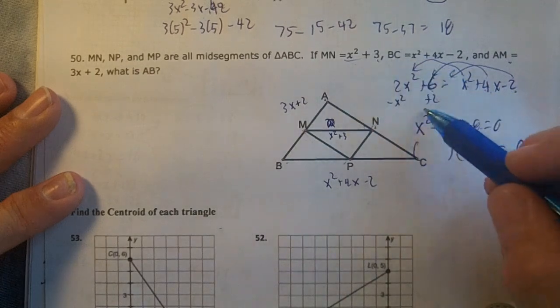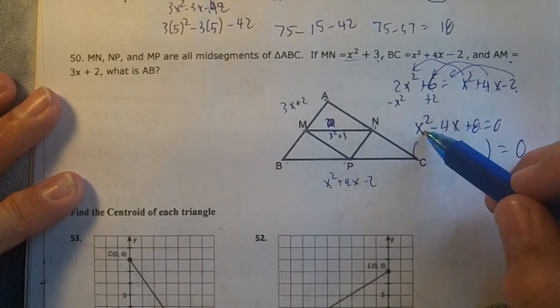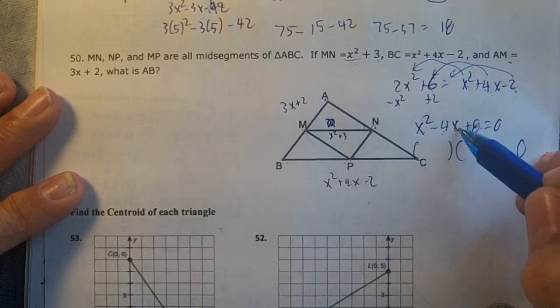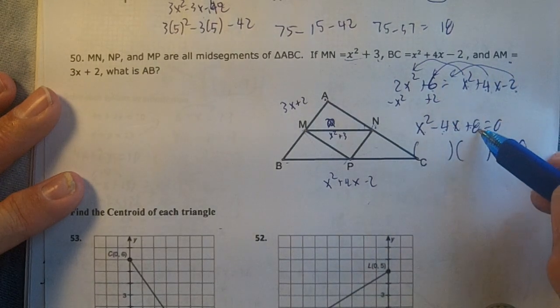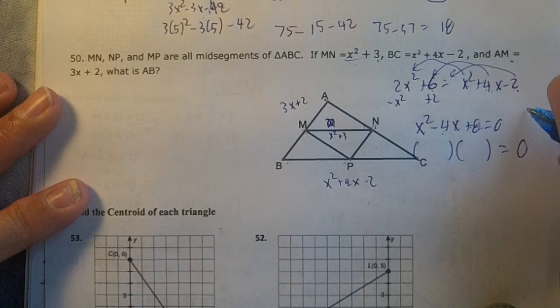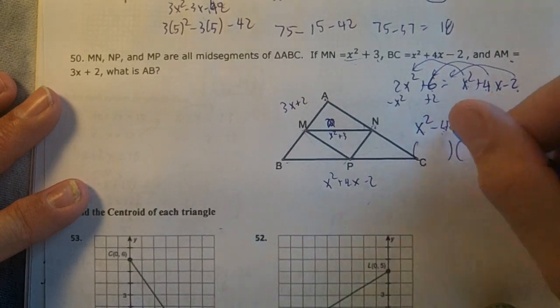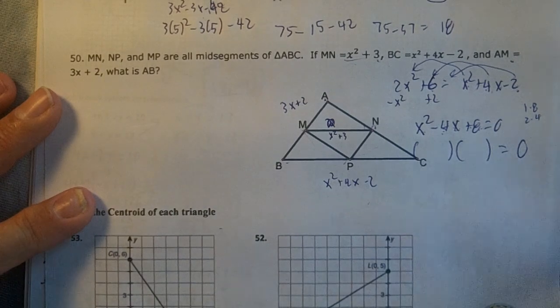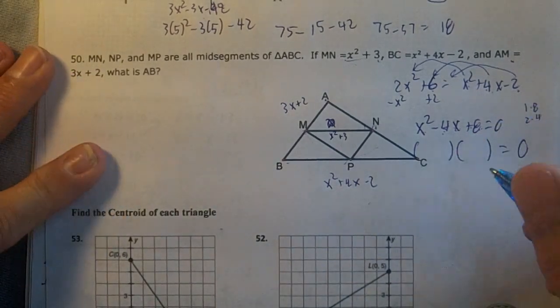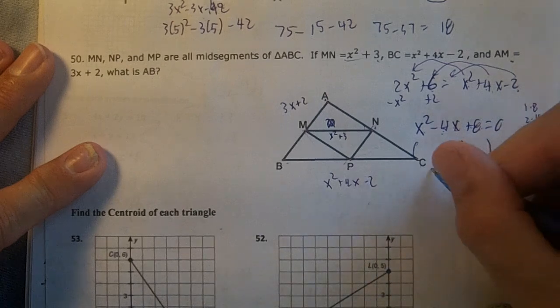For x² - 4x + 8, the factors of 8 are 1 and 8, or 2 and 4, which don't add up to 4. This won't factor. You'll need the quadratic formula.